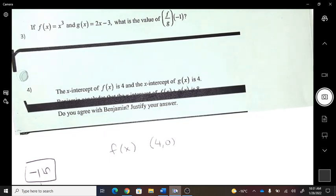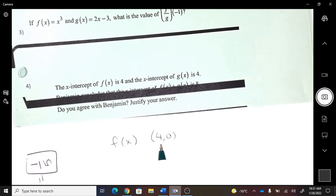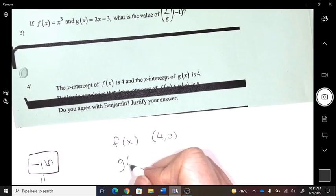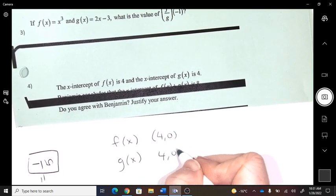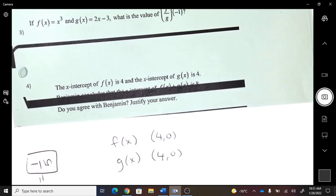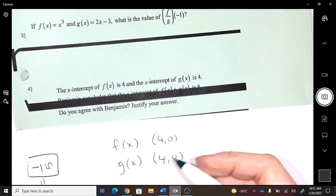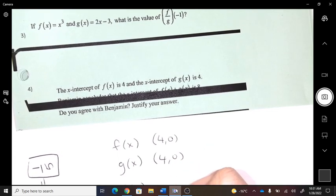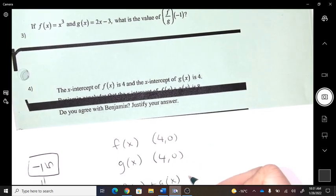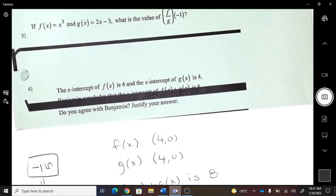That's okay, because I have another note. So the f-function has an x-intercept of 4, and the x-intercept of the g-function is 4. Benjamin concludes that the x-intercept of f of x plus g of x is 8. Do you agree with him? Yes or no?